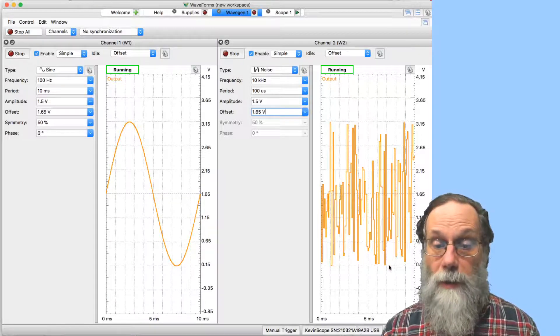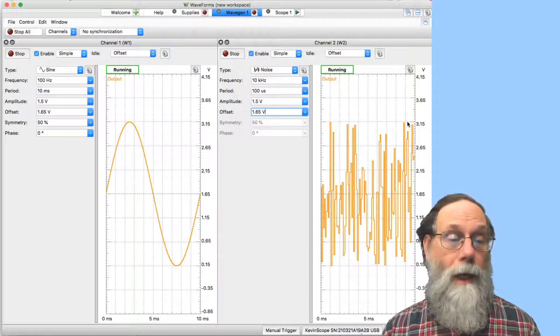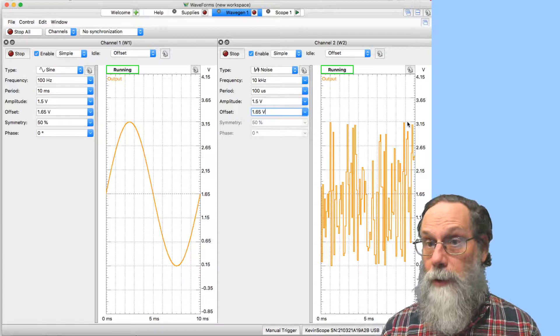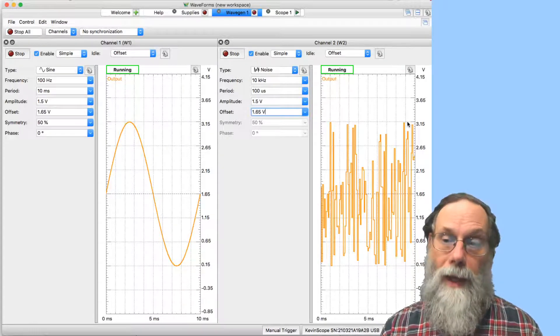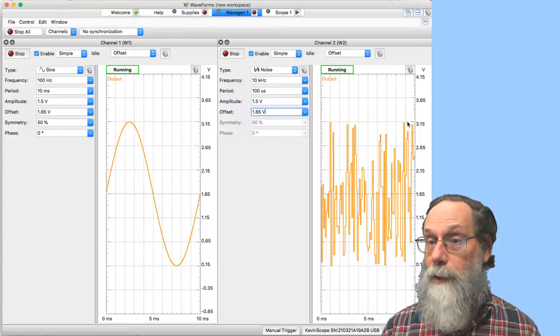So we'll have a signal again that's going between 0.15 and 3.15 volts, and if I average these two signals, waveform generator 1 and waveform generator 2, the average signal is still going to be in that same voltage range, 0.15 volts to 3.15 volts.